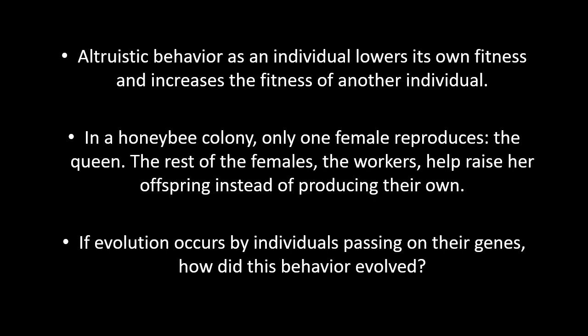Let us take the instance of the honey bee. In a honey bee colony, only one female reproduces — the queen. The rest of the females, the workers, help by raising her offspring instead of producing their own; the workers are sterile so they cannot reproduce. If evolution occurs by individuals passing on their genes, how then does this altruistic behavior of the workers evolve? How does the altruistic gene of workers evolve when workers are not reproducing? If an altruistic behavior lowers an individual's fitness and evolution selects for individuals with higher fitness, how does altruism evolve?